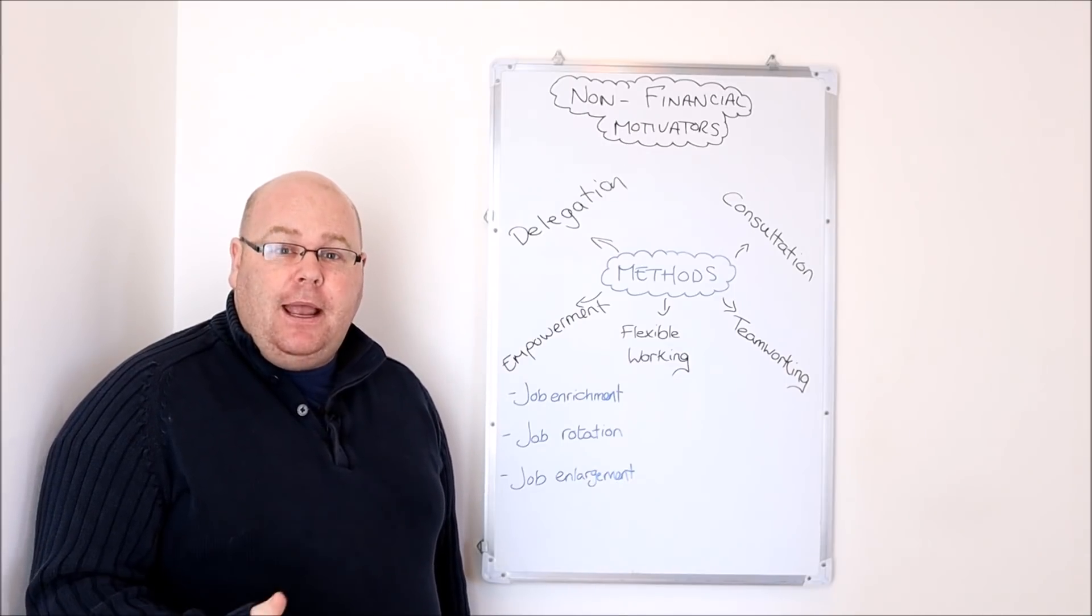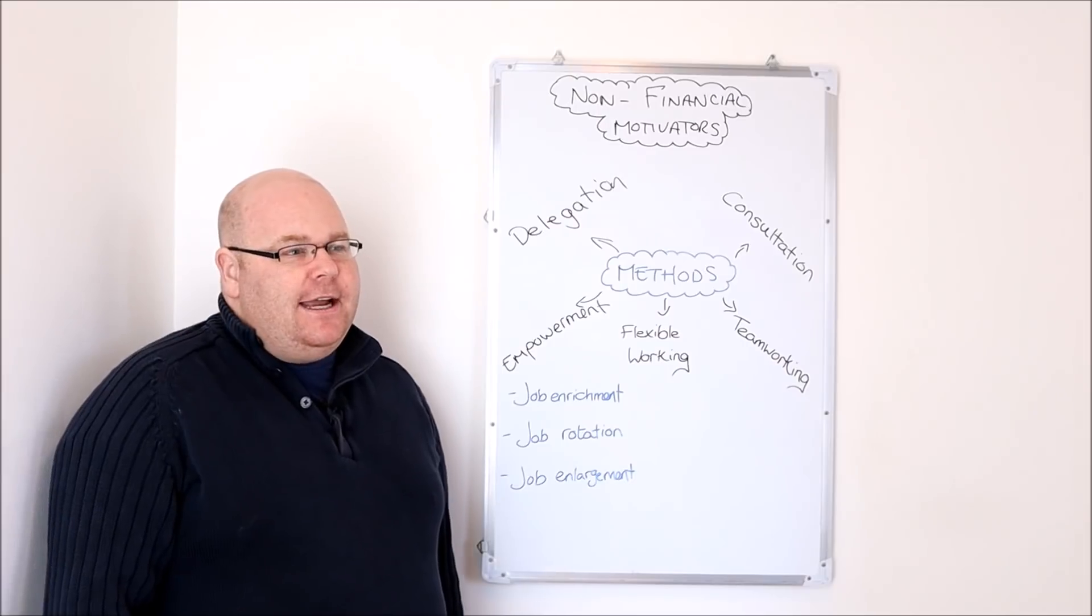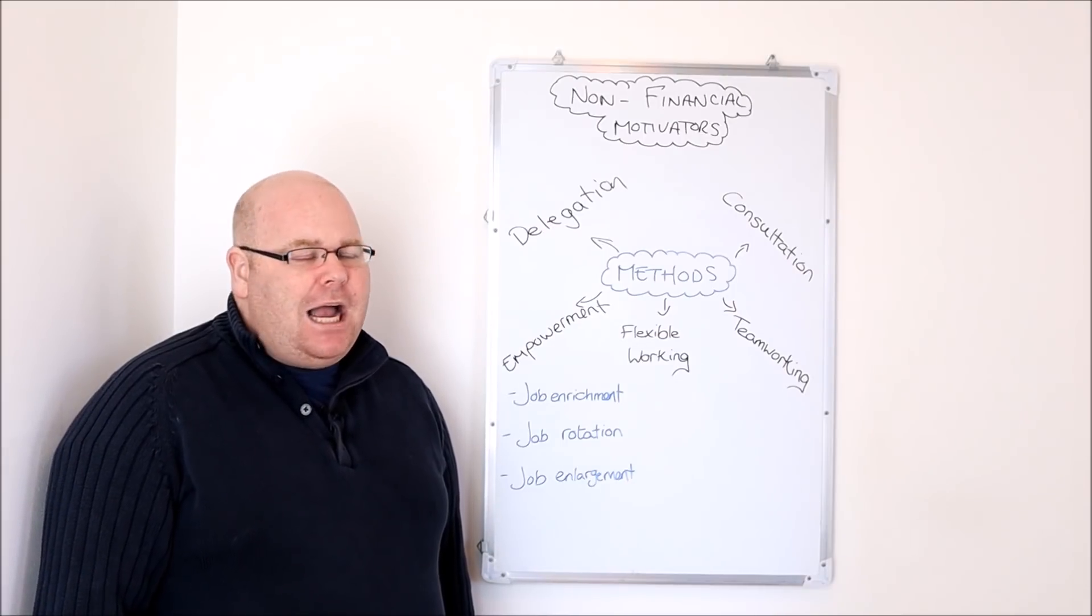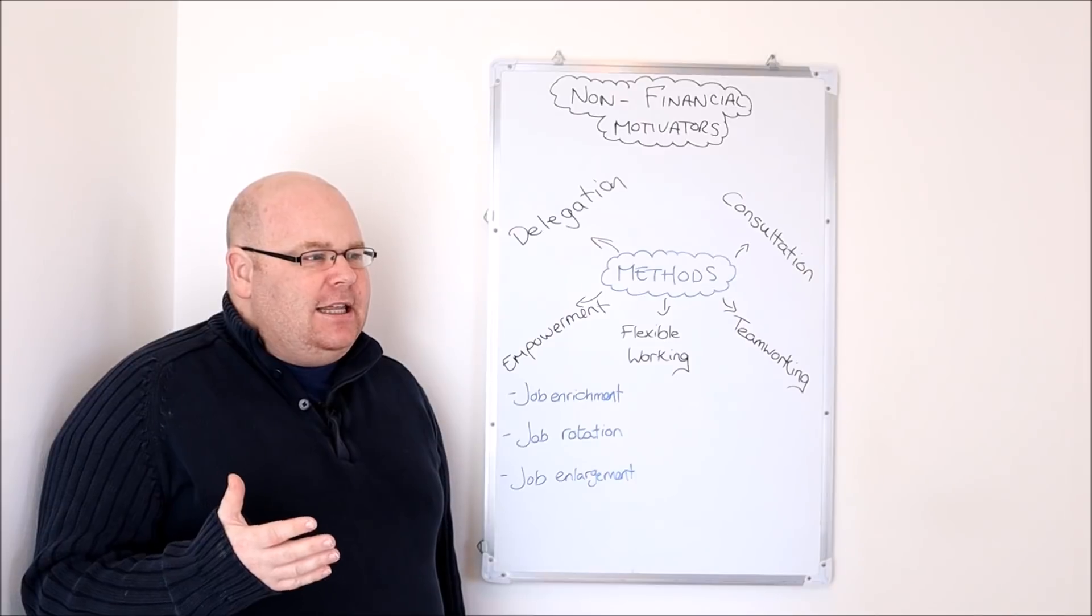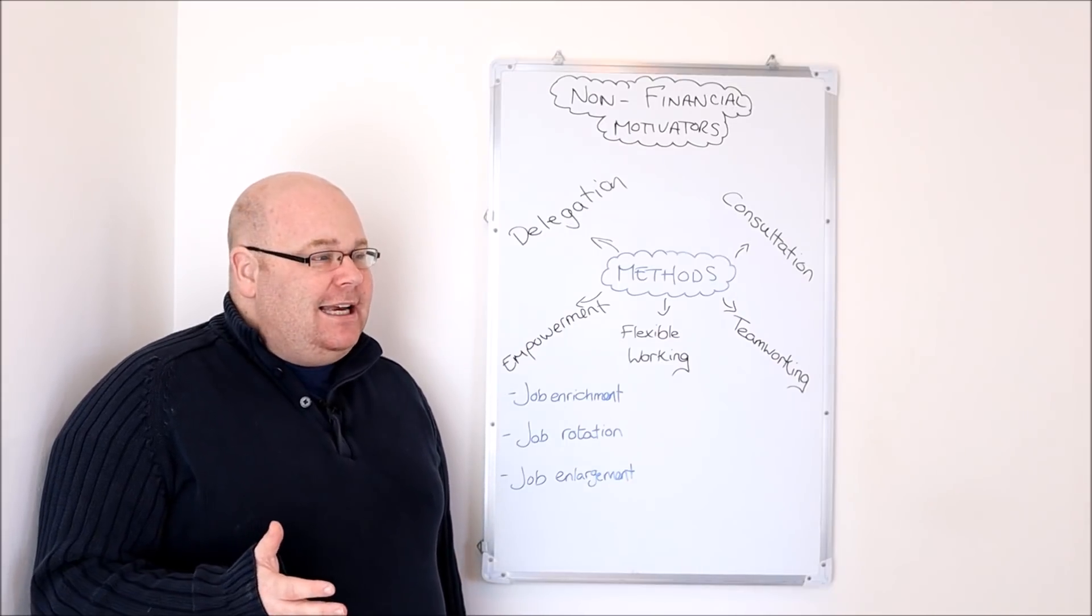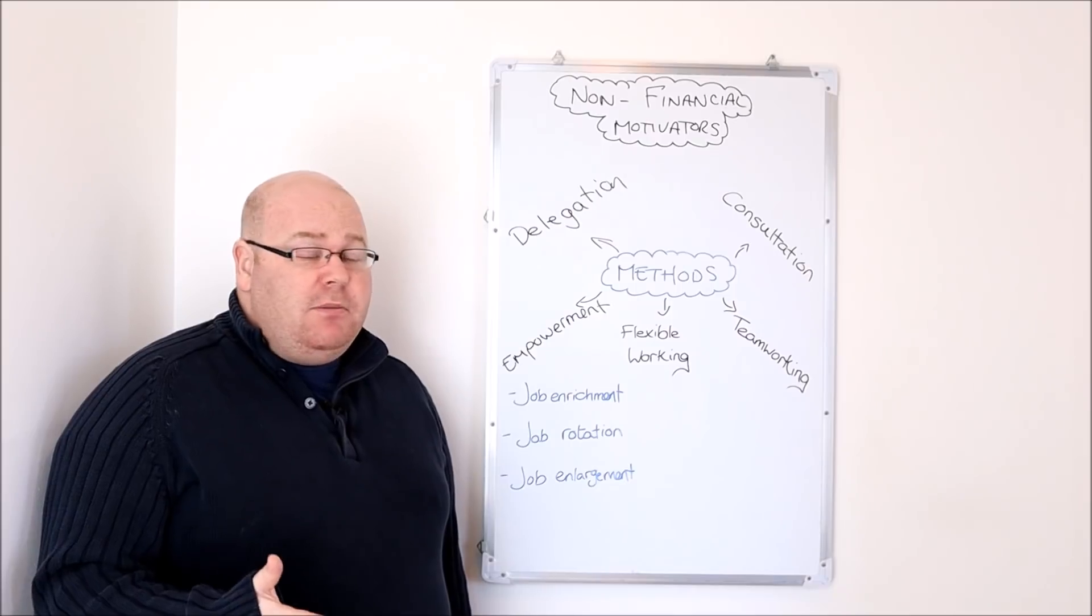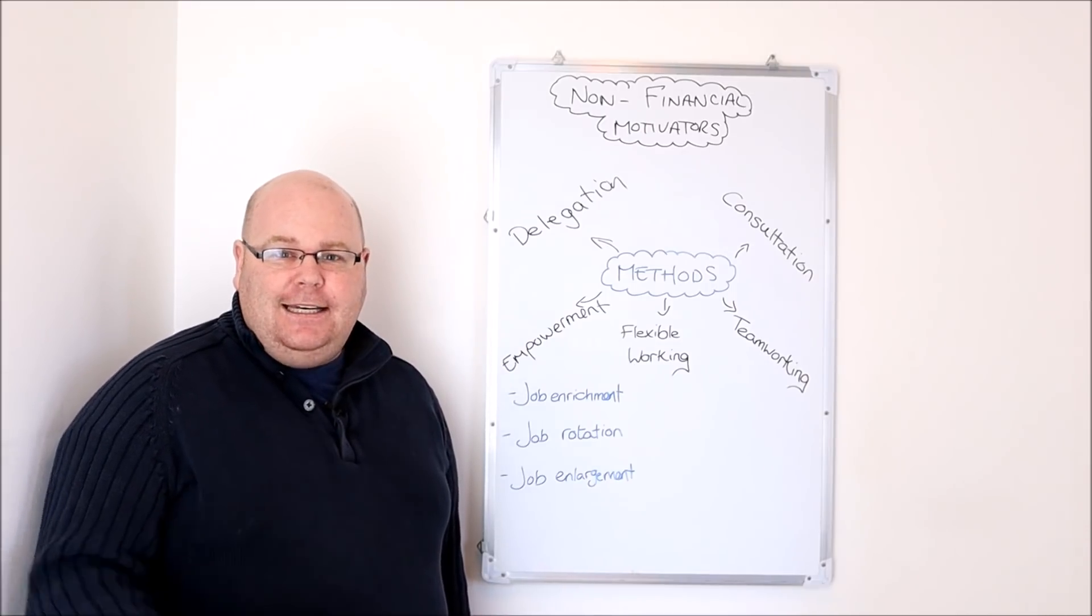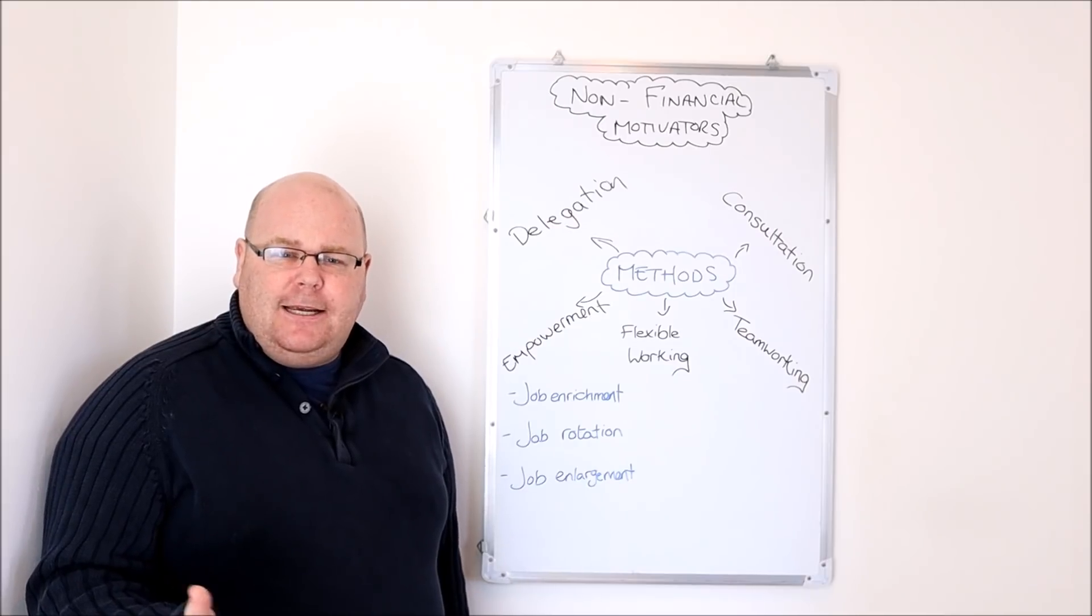The final batch of non-financial motivators we might be forced to write about in our exams are all ideas centered around the issue of empowering workers, trusting workers, seeing them as capable of doing more, seeing them as interested in the goals of the organization and being able to take on greater levels of responsibility and accountability and greater levels of challenge and variety in the work that they do. The idea of empowerment links quite closely to McGregor's Theory X and Theory Y and the view that some managers may have that workers are naturally co-invested in the goals of the organization and they strive to have more power, they strive to have more accountability and responsibility.